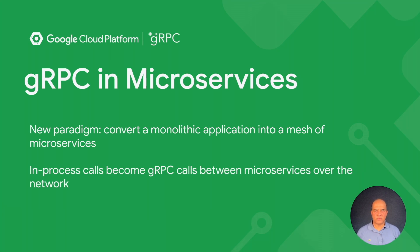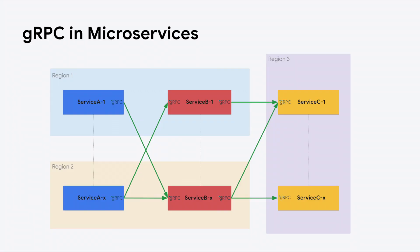But microservices introduce some complexity. You have to define and maintain interfaces between your client and server, and you have to maintain stateful connections between them. gRPC solves both of these problems for you. In this picture, the blue layer talks to the red layer, which talks to the yellow layer, and these RPCs cross network and infrastructure boundaries.